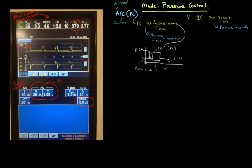Pressure control is one of those things people think is complicated, but it really isn't if you understand pressure-volume relationships: as you increase pressure in the system, volume increases, and vice versa for volume control. As long as you understand that relationship and Boyle's law, pressure control is simple — you elevate the pressure to your target level for a set time and get a resulting tidal volume. We do that a set number of times per minute — in this case 10 times a minute, elevating pressure 20 above PEEP for one second.